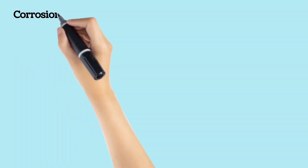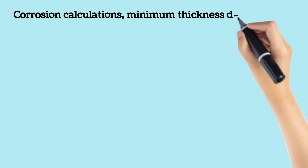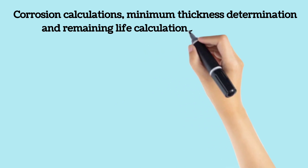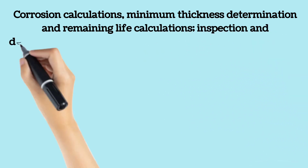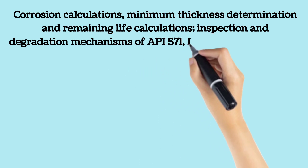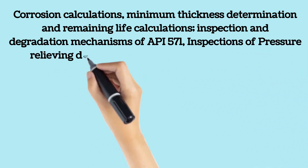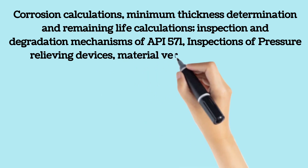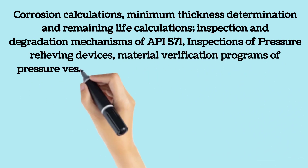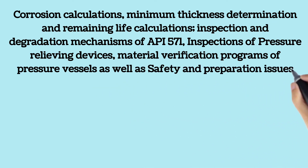Corrosion calculations, minimum thickness determination and remaining life calculations, inspection and degradation mechanisms of API 571, inspections of pressure-relieving devices, material verification programs of pressure vessels, as well as safety and preparation issues for pressure vessel repairs and alterations are the main contents of the API 510 certification exam. Damage mechanisms from API 571 are also a part of the exam.